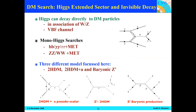Dark matter searches in the Higgs extended sector and invisible decay: the Higgs can decay directly to DM particles or in association with W and Z, or through the VVF channel. In the mono-Higgs search, different channels where Higgs goes to VV, gamma gamma, tau tau, plus MET are studied individually and in combination. The focus is on three models: the two Higgs doublet model, the two Higgs doublet plus pseudo-scalar model, and a baryonic Z model.